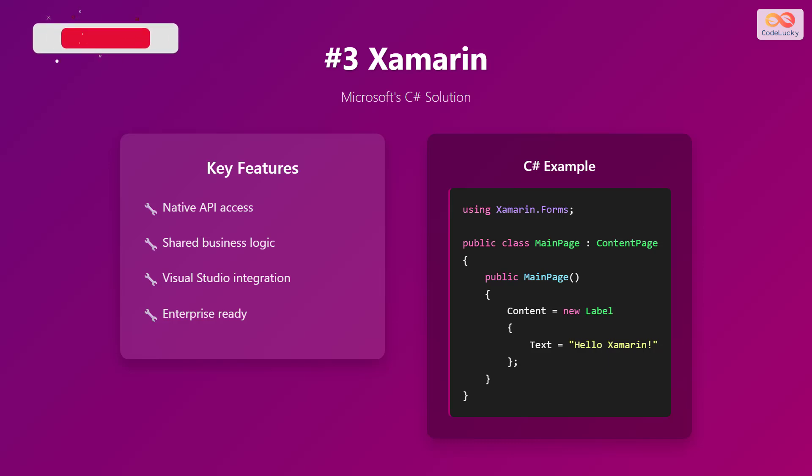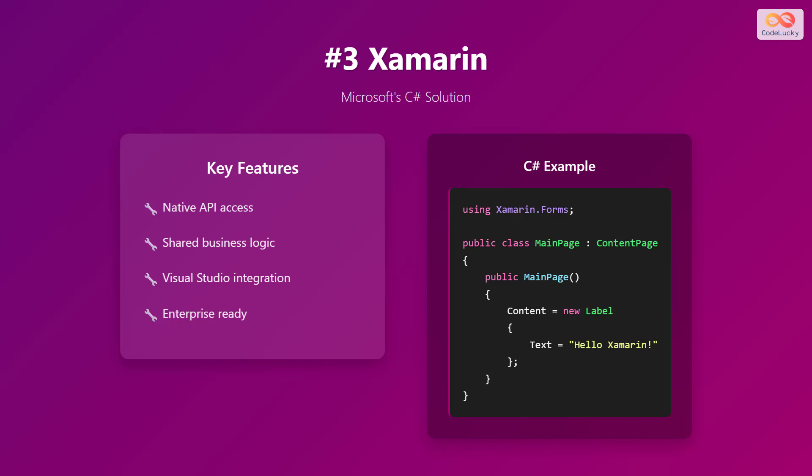Our third platform is Xamarin, which is Microsoft's C# solution for building cross-platform applications. Key features include native API access, shared business logic, Visual Studio integration, and it is enterprise-ready. The C# code example demonstrates a MainPage class that inherits from ContentPage. The constructor sets the content property to a new label with the text 'Hello Xamarin', a simple example of creating a UI element in Xamarin using C#.